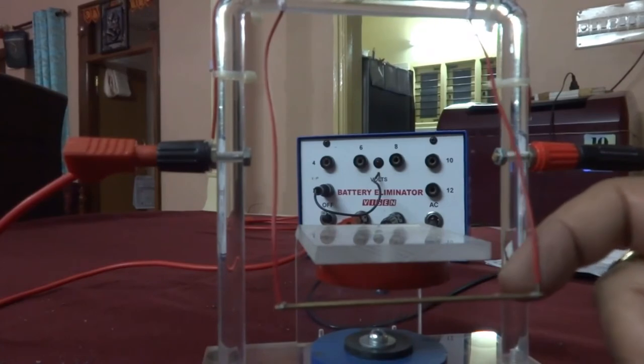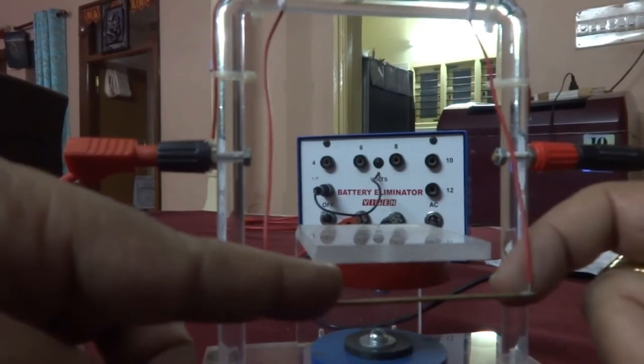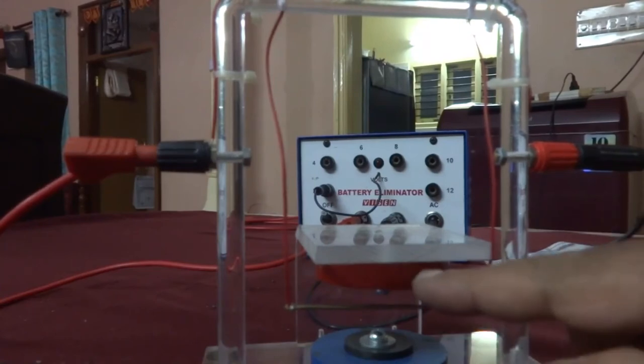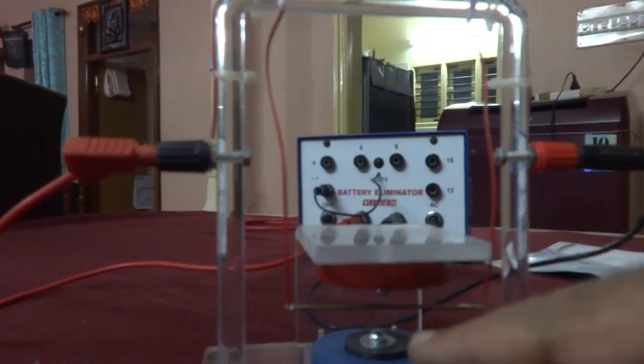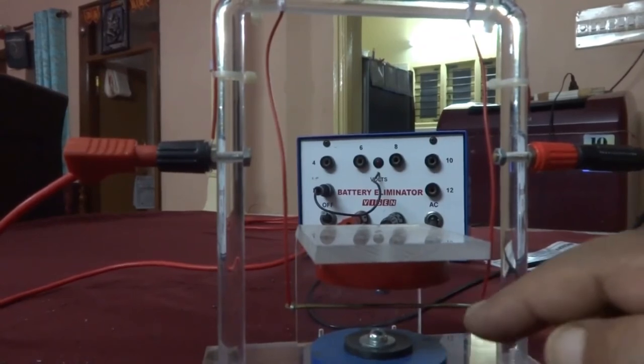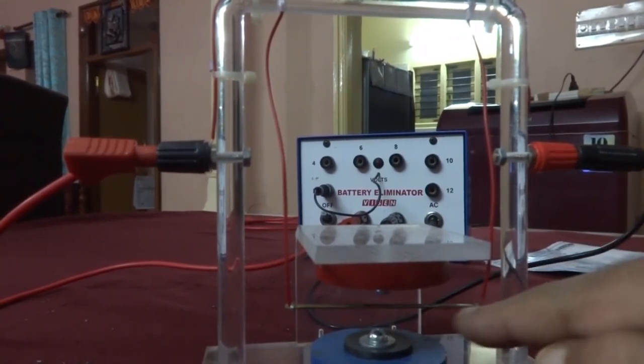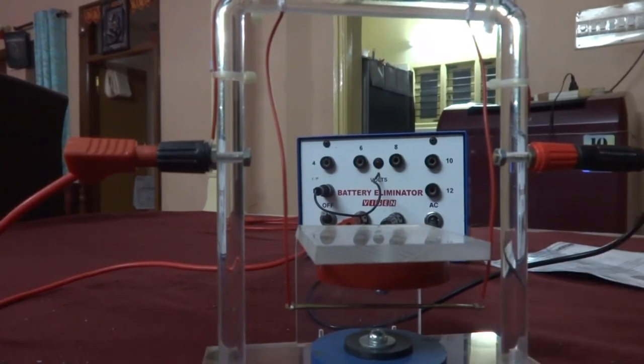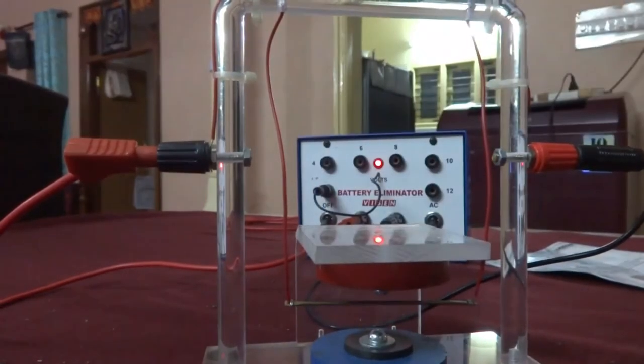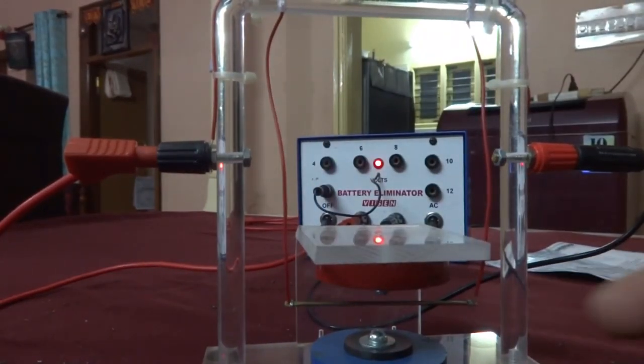In this demonstration I would like to show you the force experienced by the current carrying conductor placed in a magnetic field. So here this is a conductor. Now this is placed between two magnets. So now when I allow the current to pass through this one, then it will experience some force and it will be moved. You can see that it is moved that side.